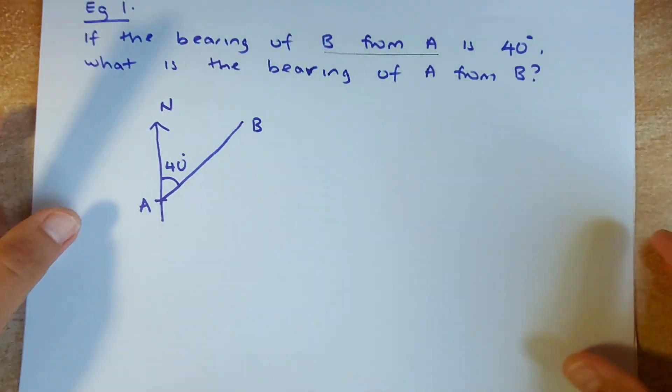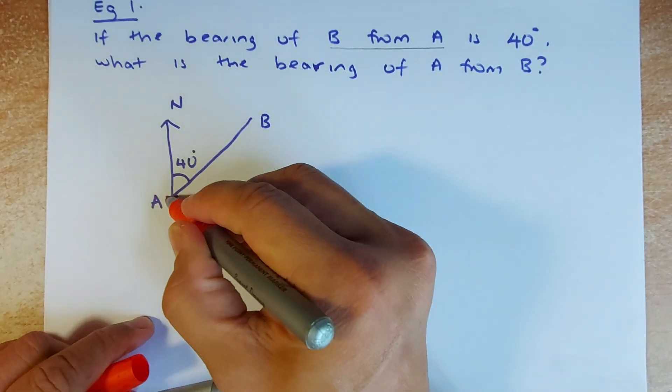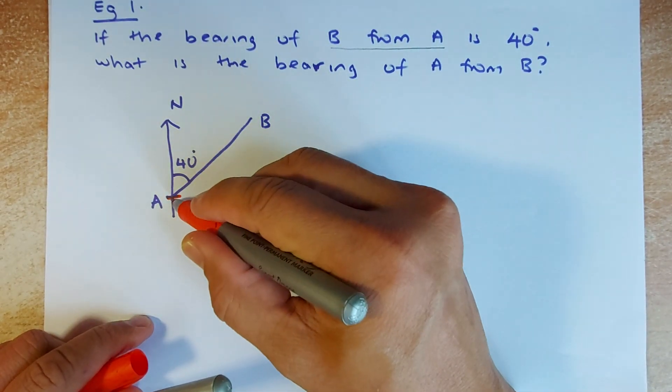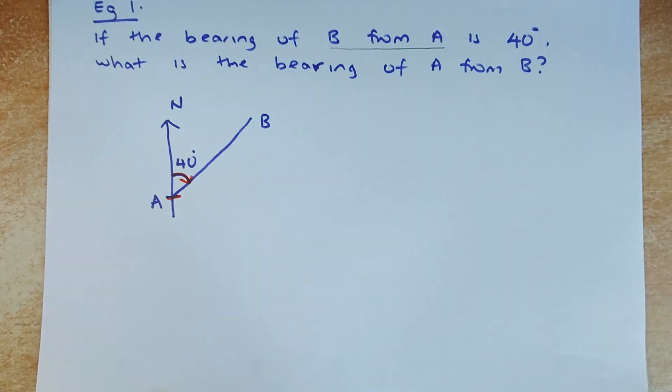Where the bearing comes from is very important. For example, if the question says if the bearing of B from A is 40 degrees, we're going to start at A. From the north you measure 40 degrees. You want to know what is the bearing of A from B.